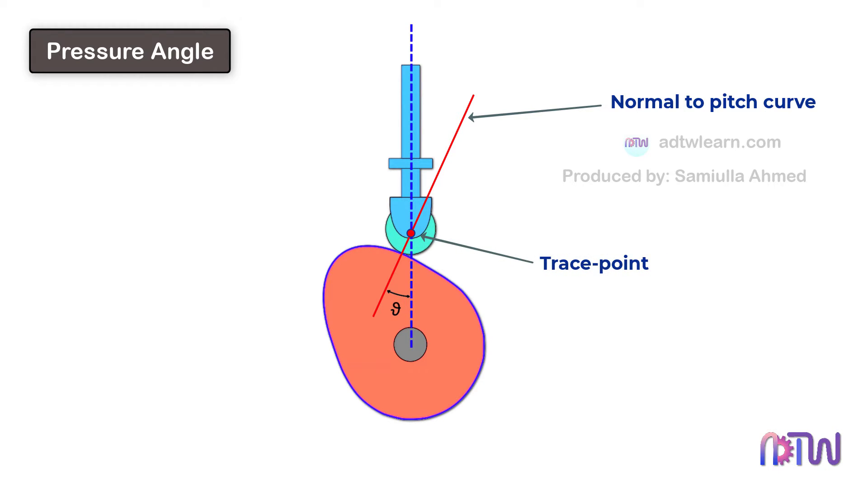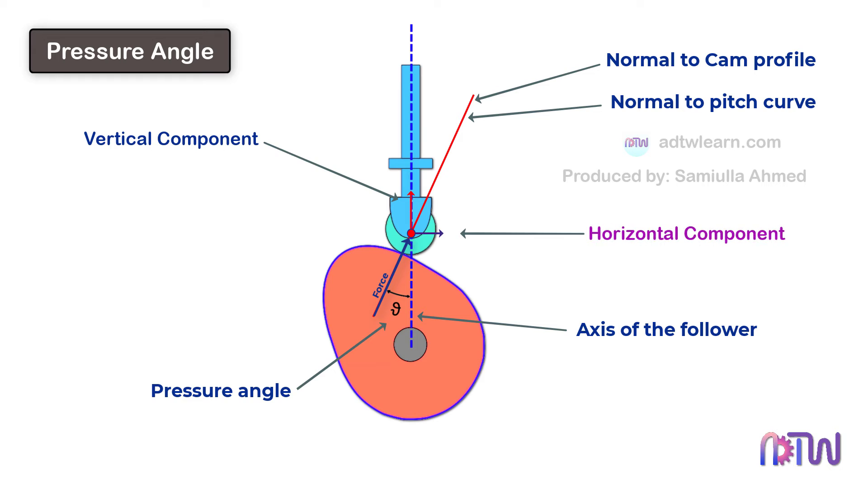In the absence of friction, the force exerted by the cam profile is fully transmitted to the follower through this point. The angle between the normal to the cam profile and the axis of the follower is called the Pressure Angle. We can see that the force acting on the follower by the cam is in this direction. This force has two components, one is vertical and the other is a horizontal component.